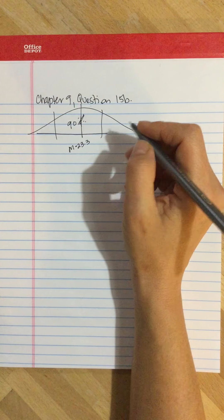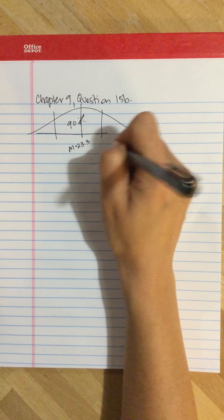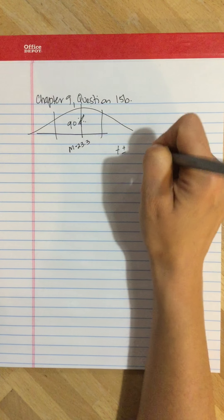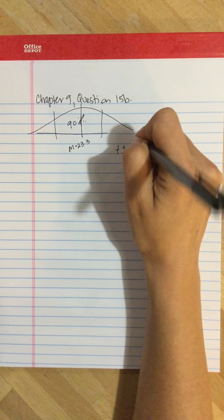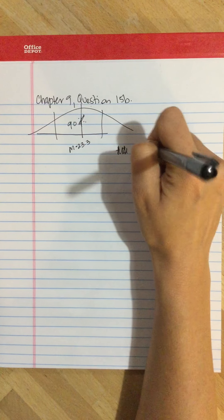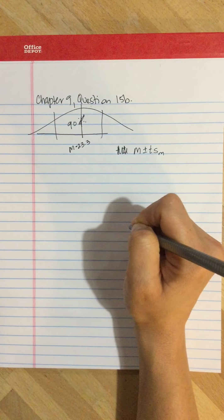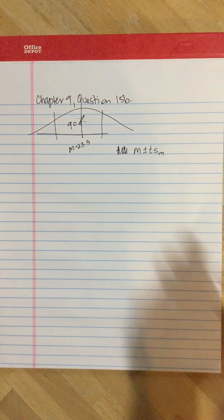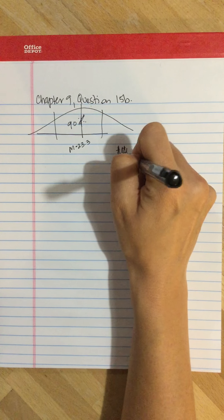To do that, the formula for the confidence interval is the mean plus or minus t times the estimated standard error. So the mean is 23.3.